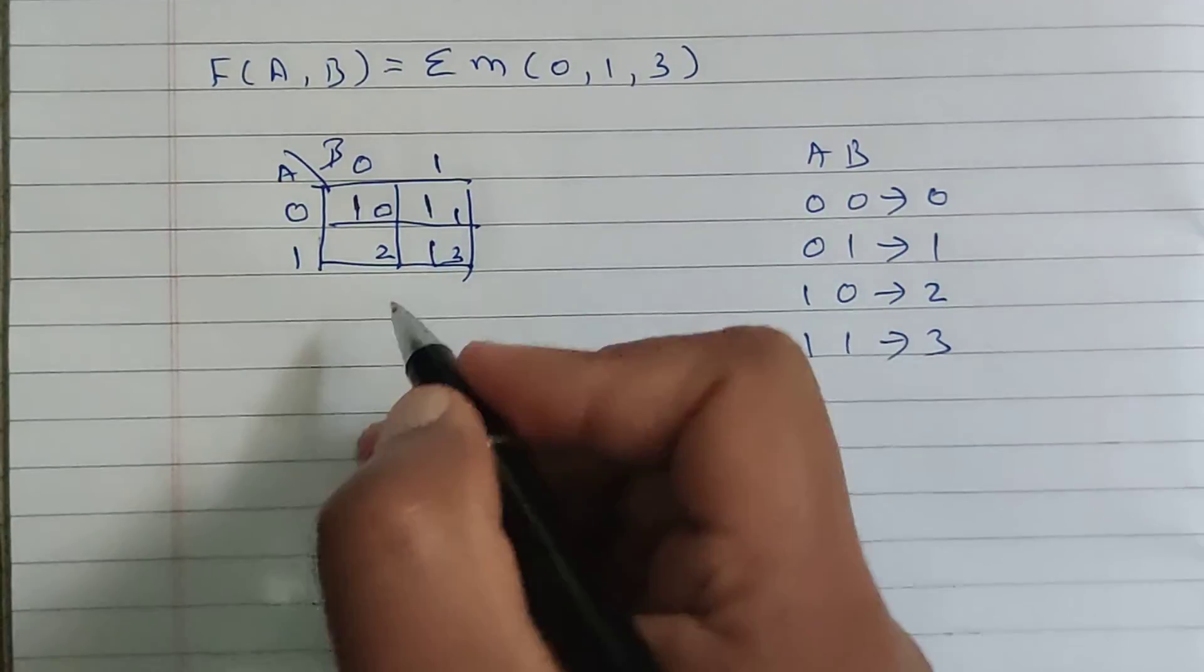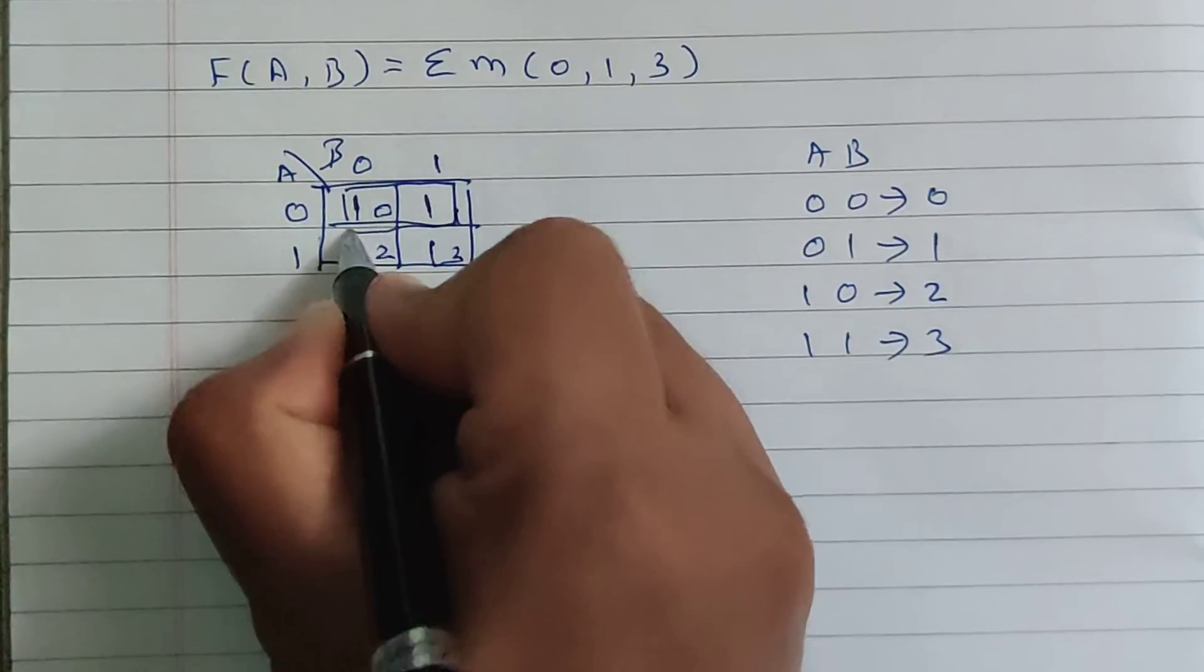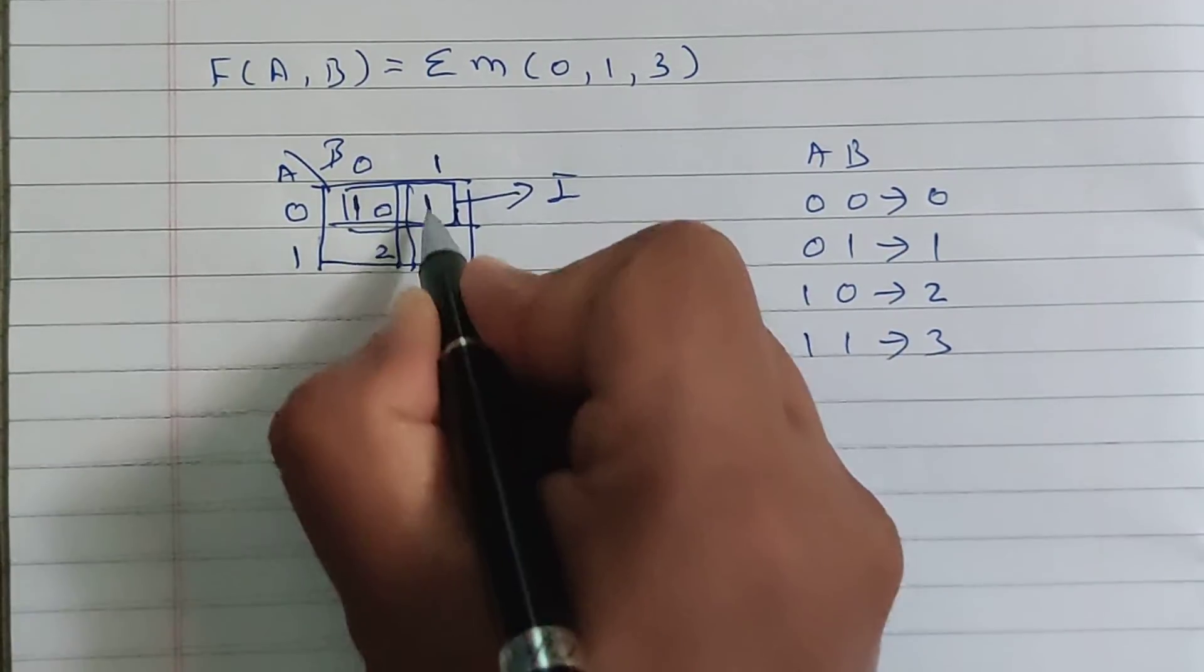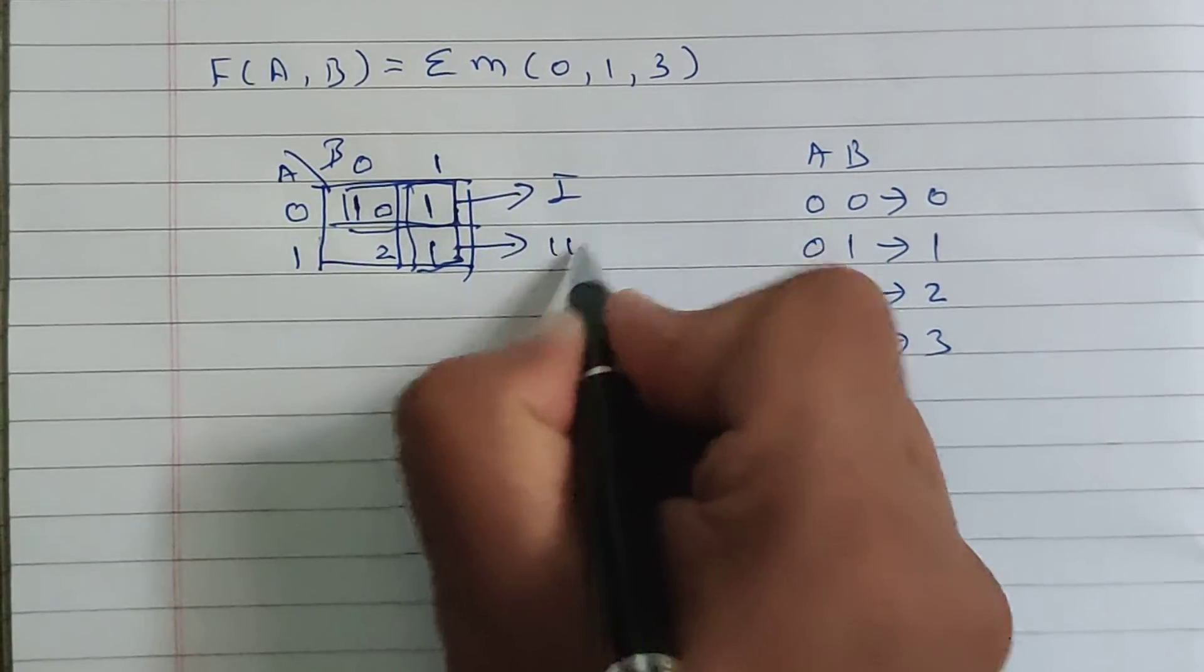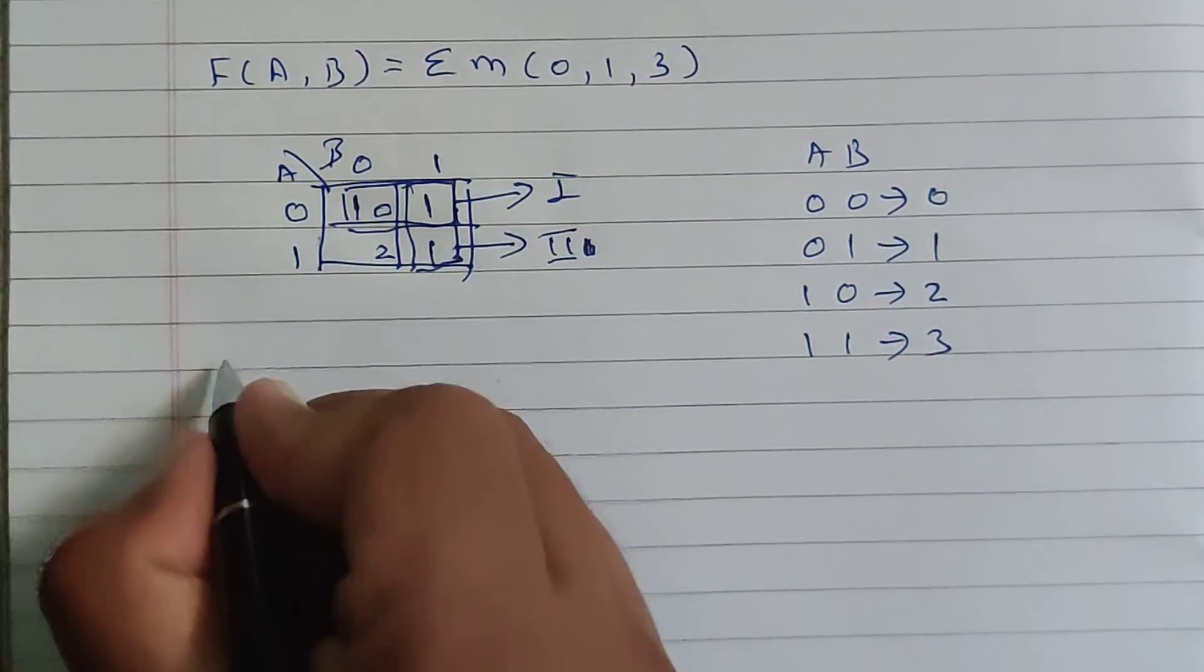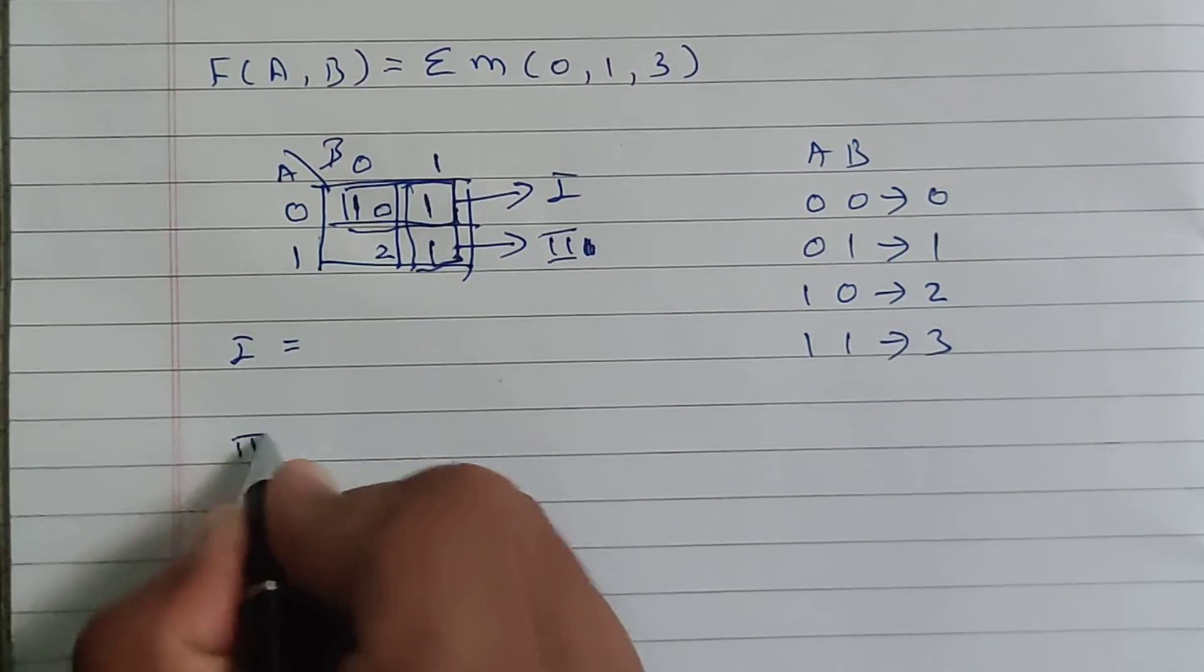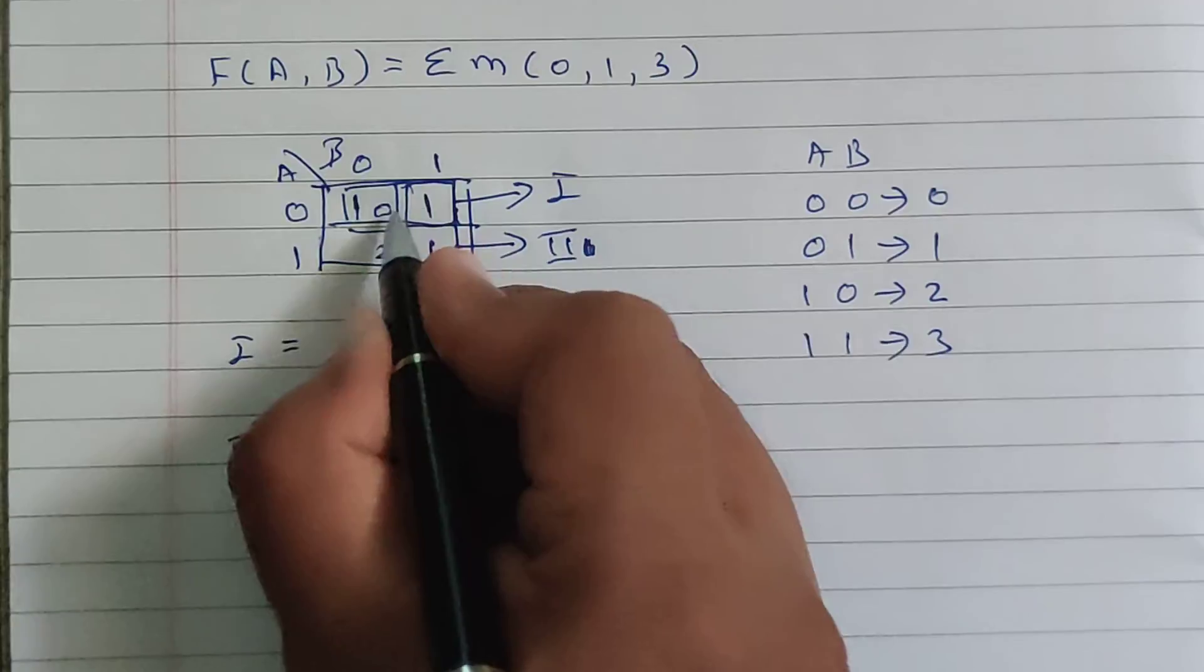Now we can make group of horizontal ones as well as vertical ones. Let's say that this is our group number 1, and we can also make the group of vertical ones. And this is our group number 2. So let's solve equation of group number 1 first, then we will solve equation number 2. So for equation number 1, how many ones are there?